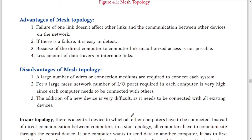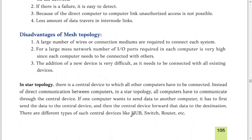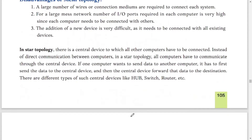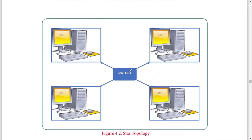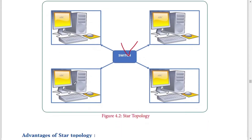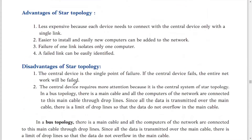In star topology there is a central device, a switch, through which all other computers are connected. The advantage is it is less expensive because each device only needs to connect to the central device with a single link. If you want to add a new computer to a star topology, you just need one cable connected to the hub or switch. It is also easier to install.